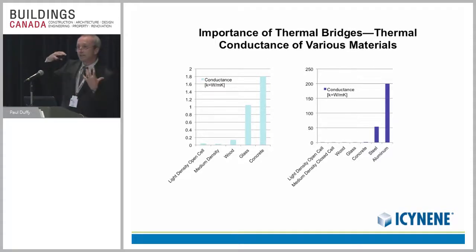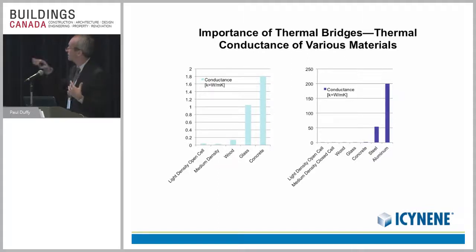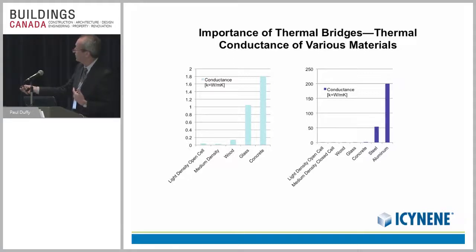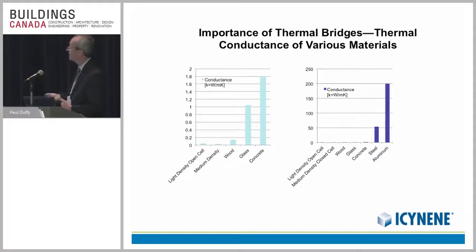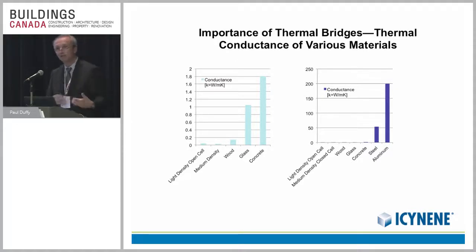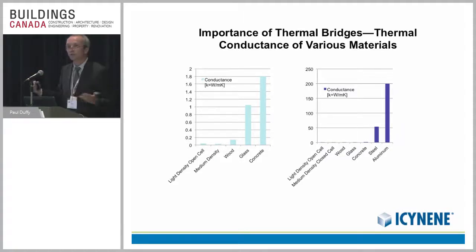Looking at heat flow another way — flipping it to conductance — you can see various insulation products occupy a very tight band. Compare that to wood, which is kind of in that range. We didn't used to think about wood construction as requiring insulation to protect wood studs, but now we're getting into high thermal performance where we protect wood as well because it begins to conduct a fair amount of heat. When you get into glass and concrete, they conduct a lot of heat, so any structural bridging to the outside becomes very key to heat loss.